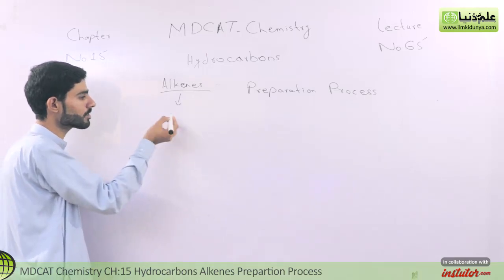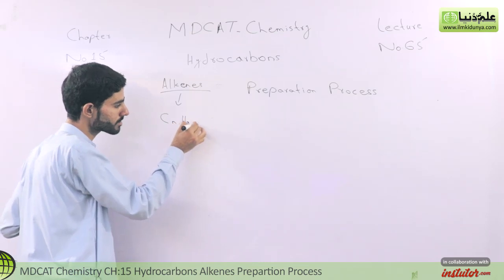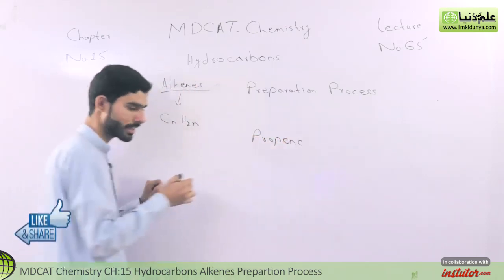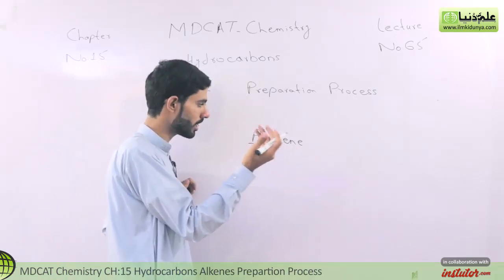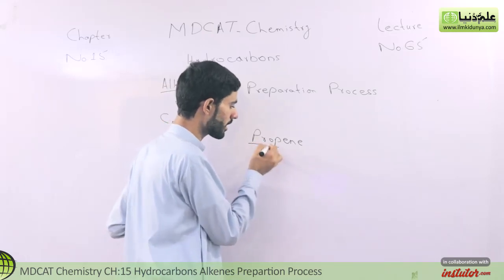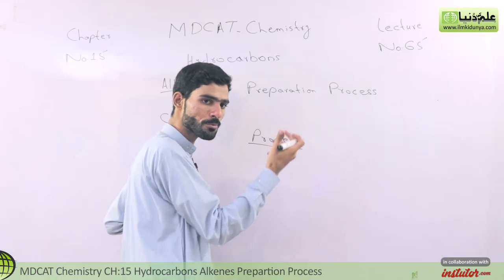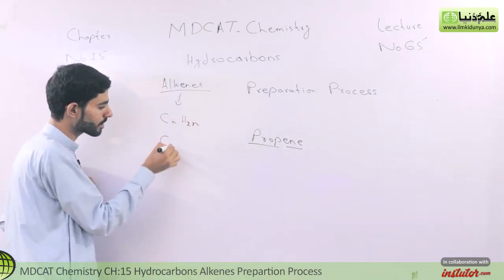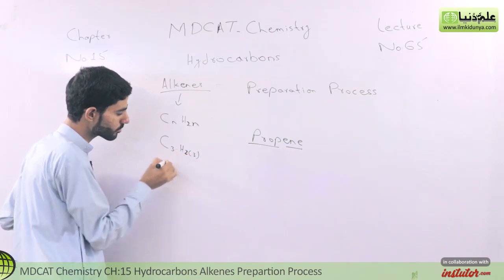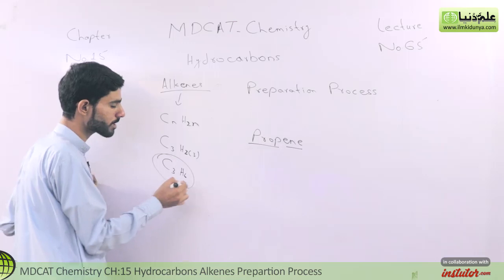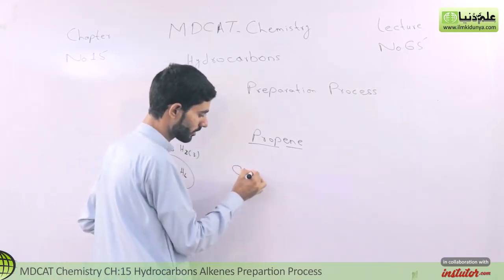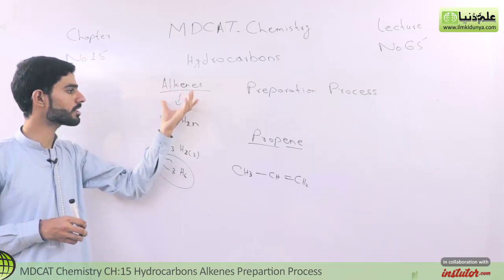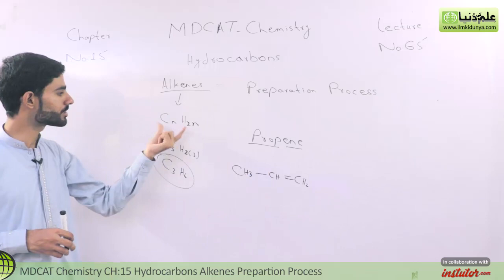When we talk about Alkenes, the general formula is CₙH₂ₙ. For example, if we talk about propene — the prefix 'prop' shows 3 carbon atoms, and '-ene' shows the type of compound — because '-ene' indicates the double bond and 'prop' shows 3 carbon atoms. So: 3 carbon atoms, 2×3 = 6 hydrogens, and we get C₃H₆. This is the molecular formula of propene, and we write the structure accordingly.